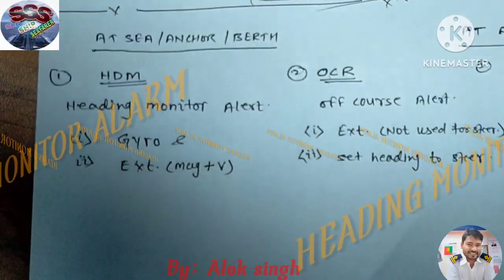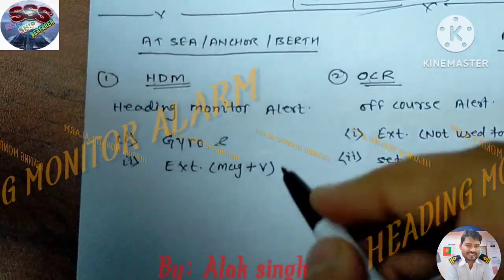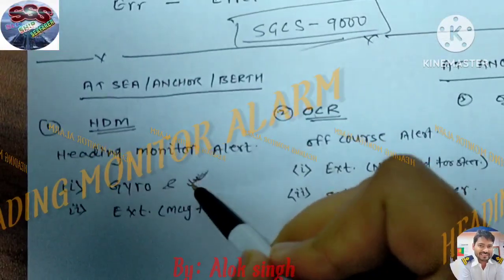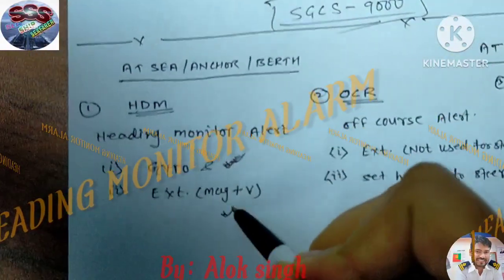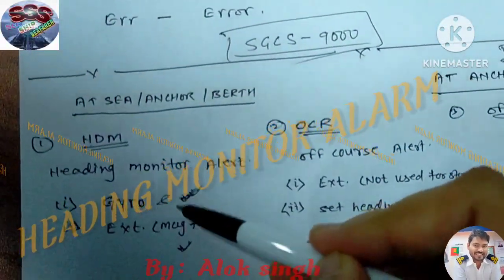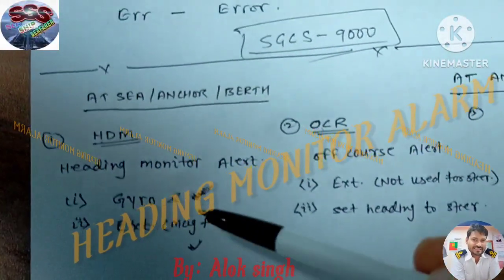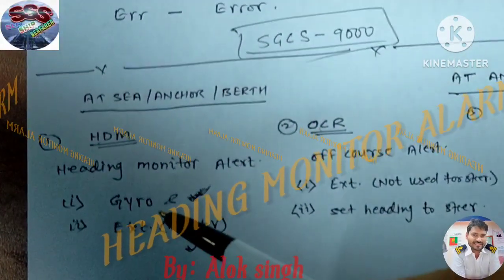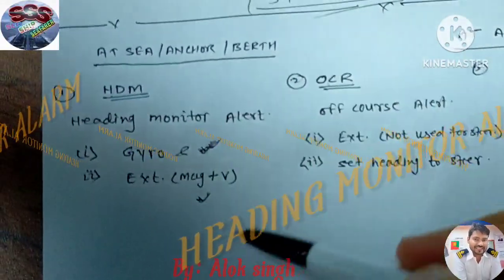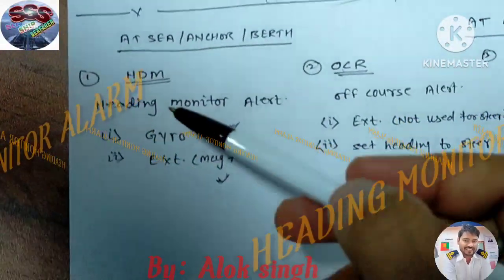The system I'm using for this explanation has only one gyro, and the other sensor is magnetic. The first one — the gyro — is used for steering. The second one is not in use for steering. It's most important to know the difference: the primary one is gyro, and if you have a second gyro, that would also be gyro — but here the external is magnetic.